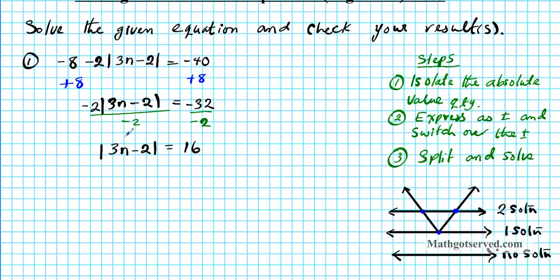When you get your absolute value quantity isolated, that's a good point to check if you have any solutions. Absolute value represents a distance from 0, and distance can never be negative. So anytime the absolute value is isolated and the number on the right is negative, that automatically tells you you have no solution. Since we have the absolute value equal to a positive number, we're confident we have at least one solution.